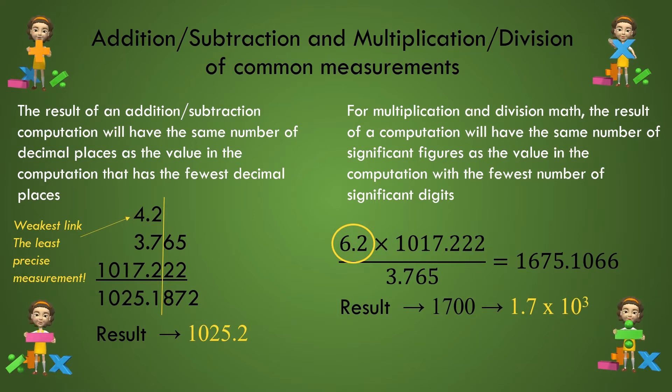But if we write it as simply 1700 after rounding off to the hundreds position, our answer will be ambiguous and others won't be able to know that it only has two sig figs. But, as we know, the number becomes unambiguous if we represent the result in scientific notation, 1.7 times 10 to the third, which now clearly reflects a value having two sig figs.